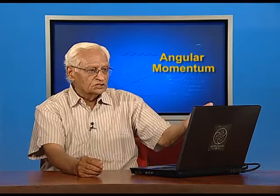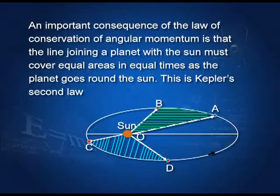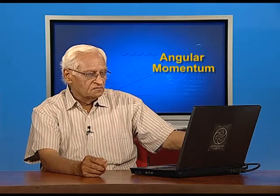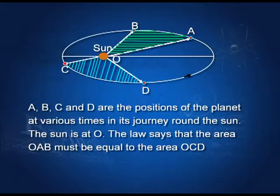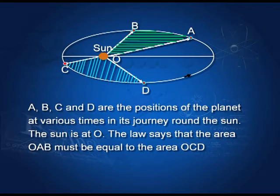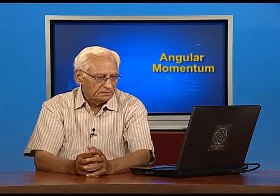Another important consequence is Kepler's second law. If a planet is going around the sun, the area traced out in a certain time must be equal to the area traced out in an equal time. So if a, b, c, d are positions of the planet, then the area AOB must be equal to the area COD. This is Kepler's second law, which you must have done in gravitation.